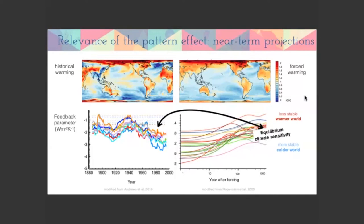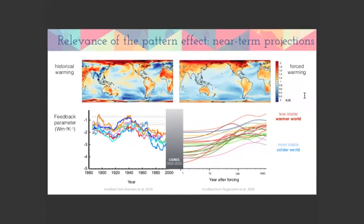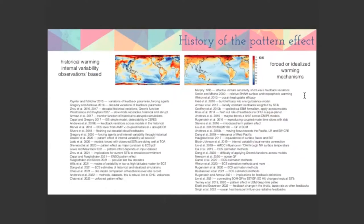We do have good observations, though they are short. Within our short observational record, the question is how much is internal variability versus forced response, and how do we make this transition to the strongly forced response that climate models project. I'll now try to organize the literature on this — most of these papers are very recent — by going slowly through the first three foundational papers that laid the groundwork.